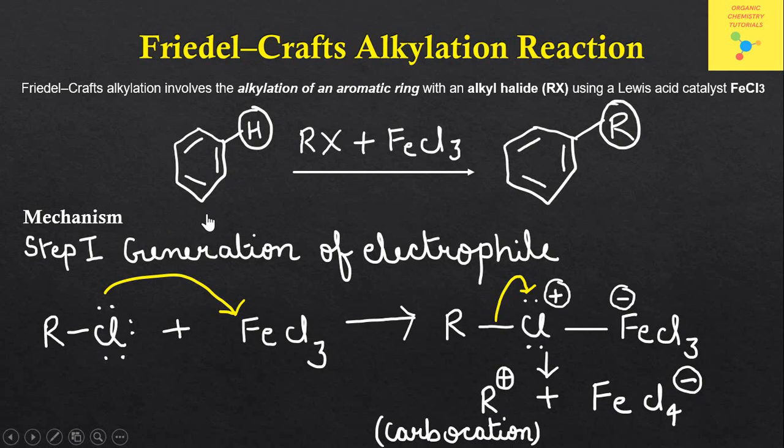Let us discuss the mechanism of this reaction. This reaction involves three steps. In the first step, the electrophile is generated. FeCl3, which is a Lewis acid, can accept a lone pair of electrons in its valence shell. The chlorine atom has lone pairs of electrons that can be donated into the vacant p orbital of this atom.